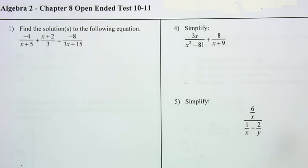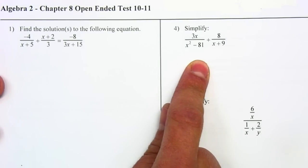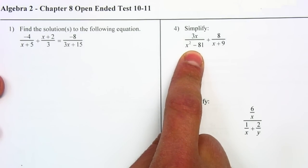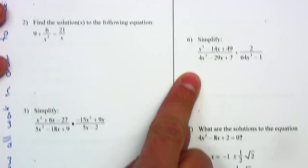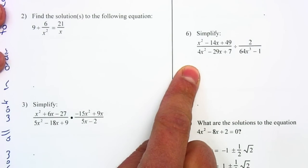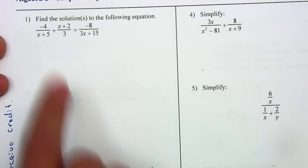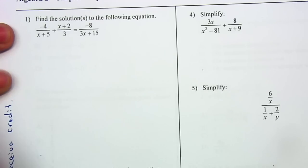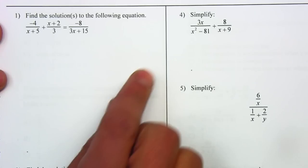Good morning. Today we are reviewing Chapter 8, which is rational expressions. In Chapter 8 we learn how to add fractions where we have a polynomial on the denominators. We also multiplied and divided rational expressions, as well as solving rational expressions. Now let's go and review the different processes for each one.